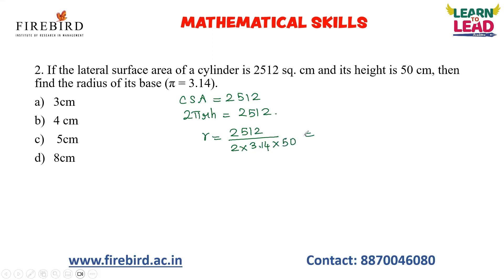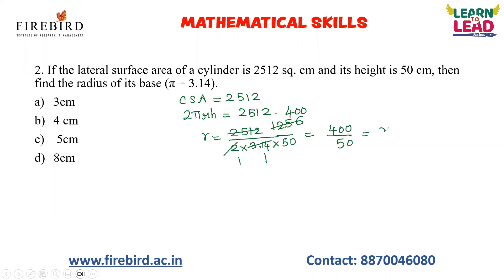Radius equals 2512 divided by (2 × 3.14 × 50). Cancelling the 2s, we get 1256 in the numerator. We know 3.14 multiplied by 4 gives 1256, because 14 fours are 56 and 3 fours are 12. Cancelling 3.14 from numerator and denominator, we get 400 divided by 50, which gives eight. So the radius of the cylinder is eight. If you know the basic concepts of mensuration it is easy.